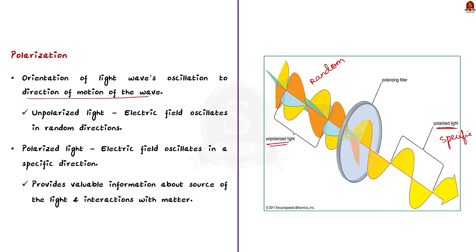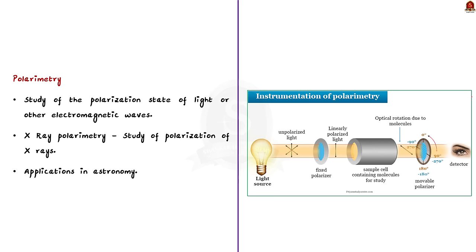Look at this image to understand it better. This is unpolarized light, and this is the polarizing filter. After passing through the polarizing filter, the light becomes polarized. Polarimetry means the study of the polarization state of light or any other electromagnetic waves. If we study the polarization of X-rays, it is called X-ray polarimetry. X-ray polarimetry is mainly used in astrophysics and astronomy to study various celestial objects. Analyzing the polarization provides insights into the nature, composition, and magnetic field of astronomical objects like neutron stars and black holes.